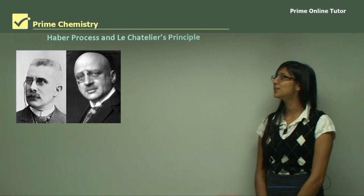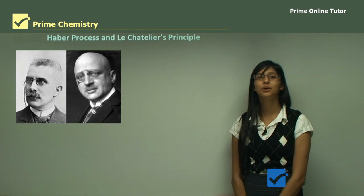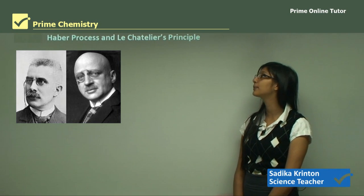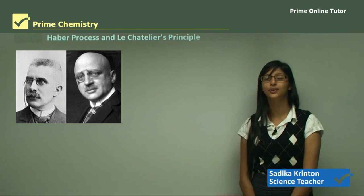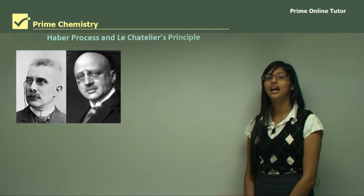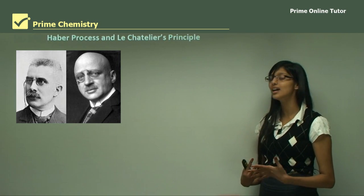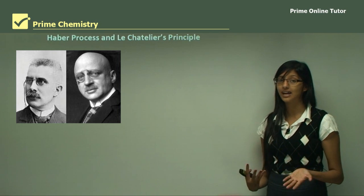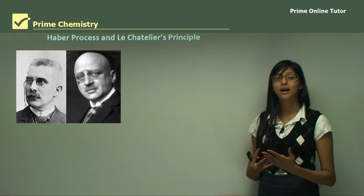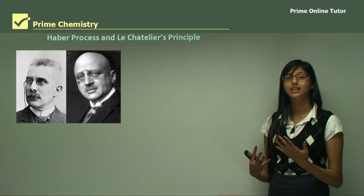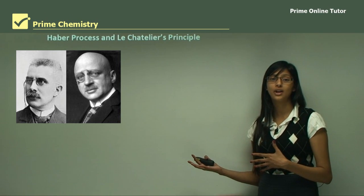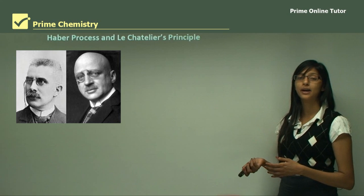Hi everyone. Today we are looking at chemical monitoring and management. In this topic, we will look at the Haber process and Le Chatelier's principle. The Haber process is the reaction of nitrogen and hydrogen to form ammonia, and this is an equilibrium reaction. Le Chatelier's principle determines the factors that affect the state of equilibrium — what favors the forward reaction and what favors the backward reaction.